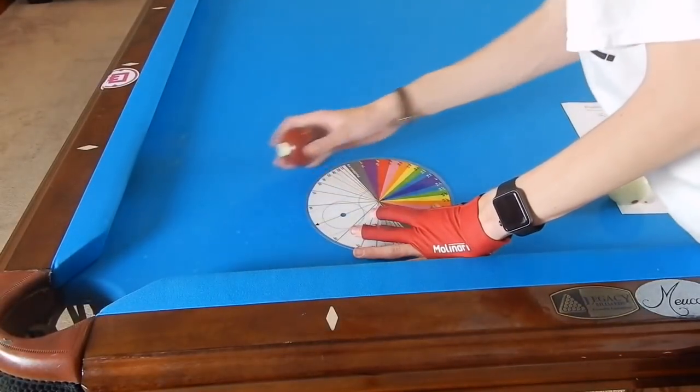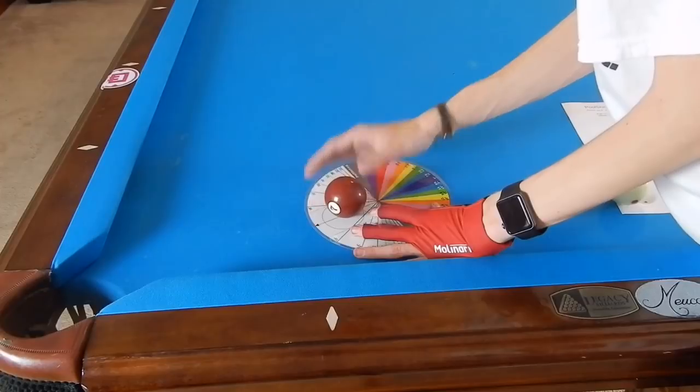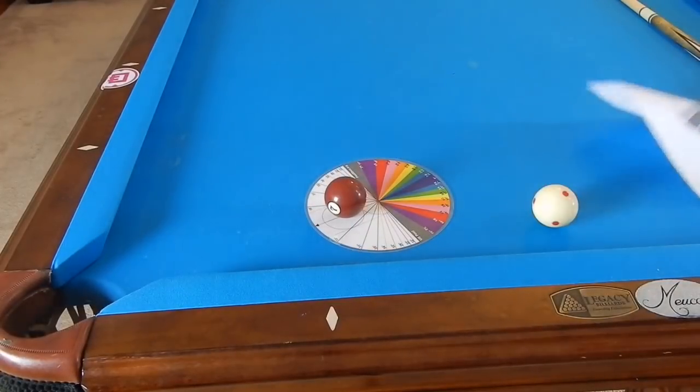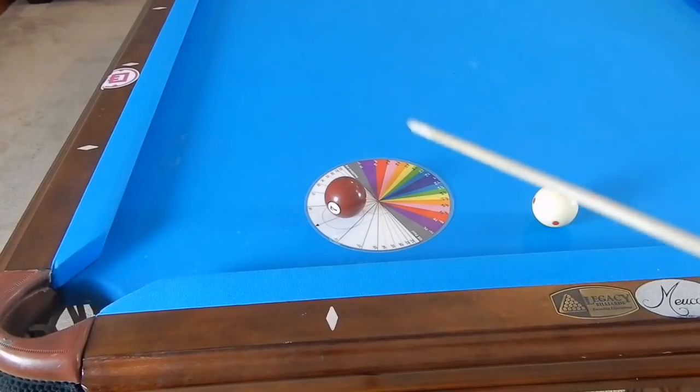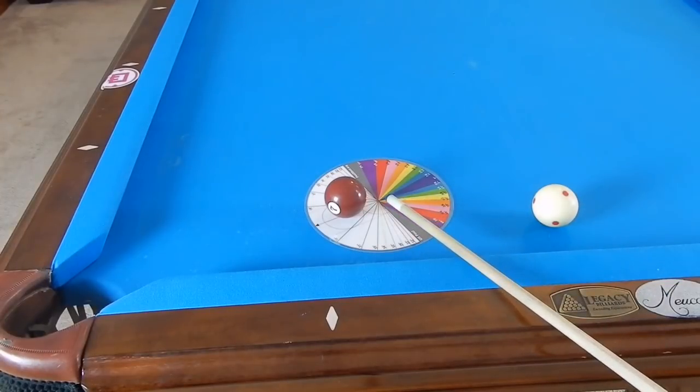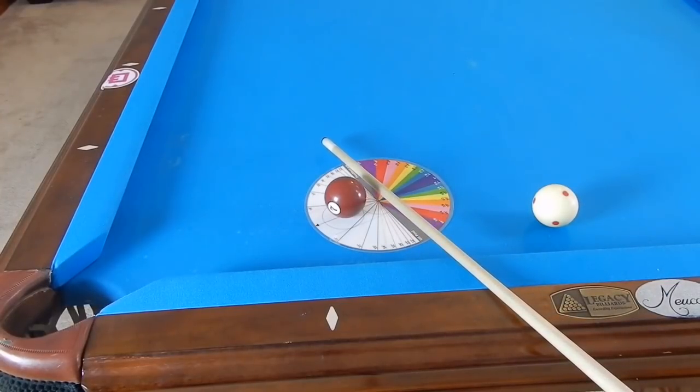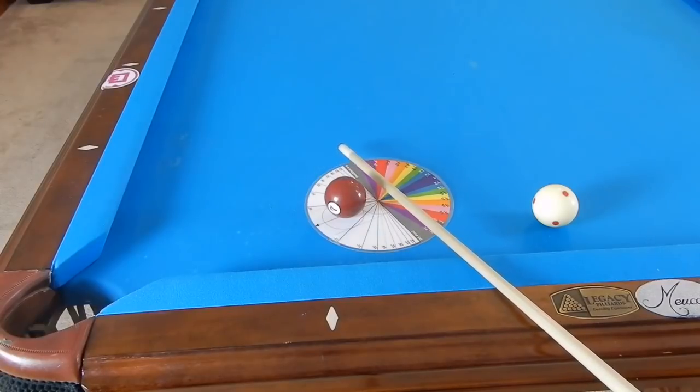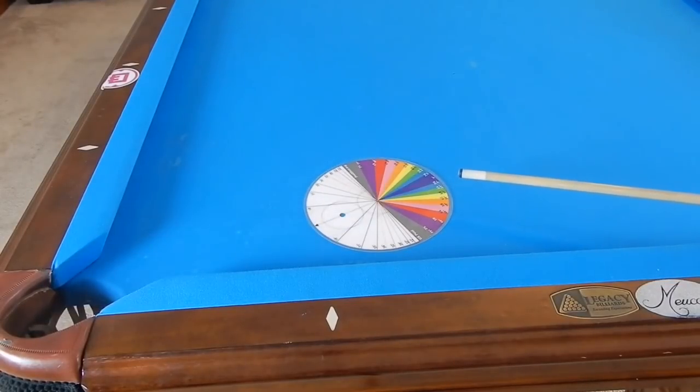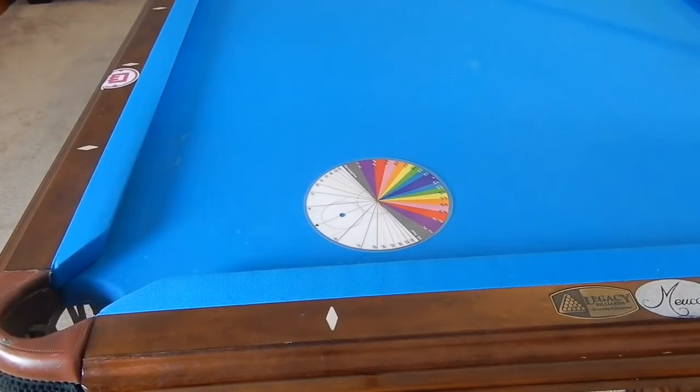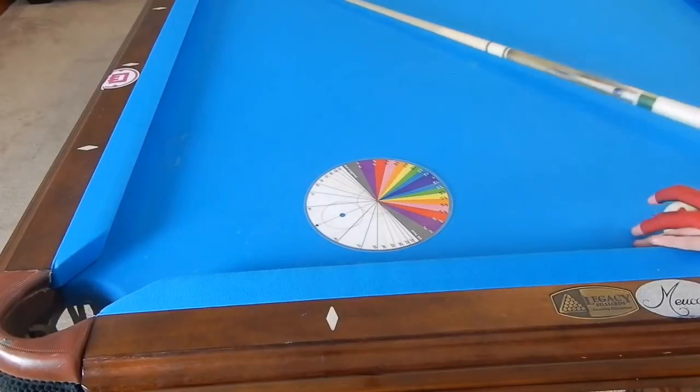Let's say we're cutting this seven ball in - that means our cue ball will contact the ghost ball position and go 90 degrees from the seven ball down this tangent line, as you see if you use center ball. If we hit it completely at the center, you see our cue ball goes across that tangent line 90 degrees.